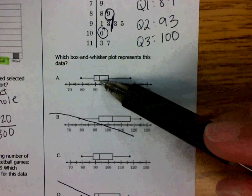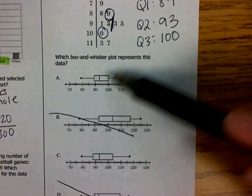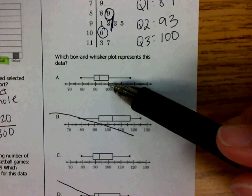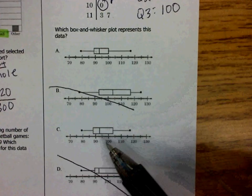So in the first one, quartile 2 is at 93. It's most likely A. Let's go ahead and check quartile 3. Quartile 3 is 100. I'm pretty sure it's A, but just to be sure, I check further down.